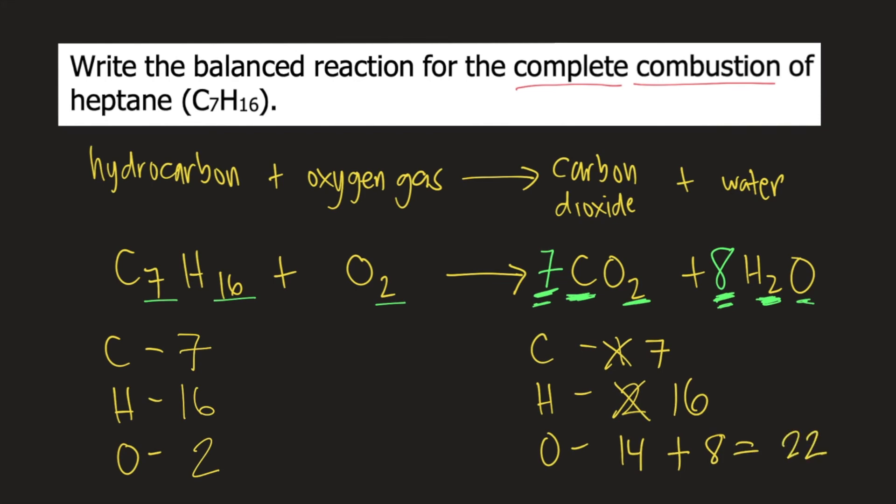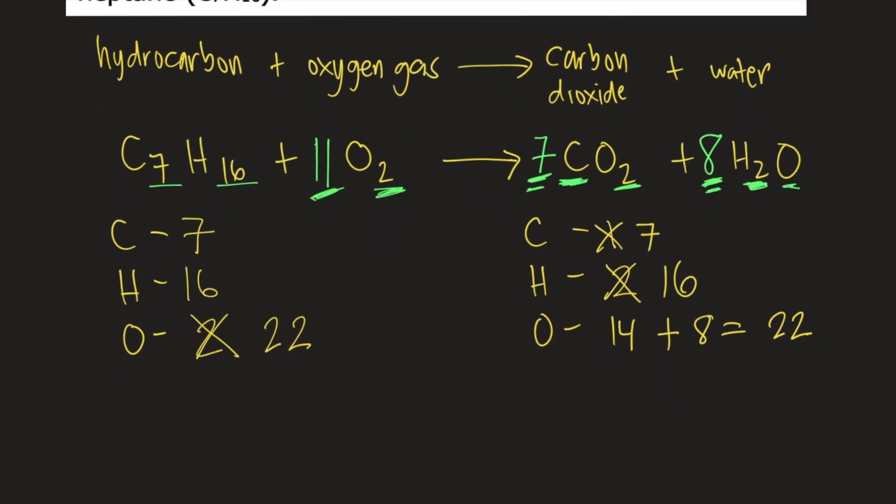So how do we balance oxygen? We put the coefficient 11 on oxygen gas, because 11 times 2 is 22. Now that all elements are balanced, the reaction is already balanced. So the answer to this question is C7H16 plus 11O2 forms 7CO2 plus 8H2O.